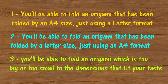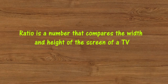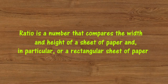I will first introduce the concept of ratio. What is ratio? The FEMO dictionary says ratio is a number that compares the width and height of the screen of a TV. Well, the screen of a TV is rectangular, and so is our rectangular paper, so this is perfectly applicable. We can finally say ratio is a number that compares the width and height of a rectangular sheet of paper.